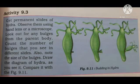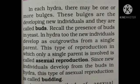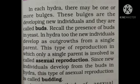In each hydra there may be one or more bulges — these bulges or outgrowths are the developing new individuals and they are called buds. Recall from Class 7 the budding in yeast — a small outgrowth develops in the parent cell, it matures, gets detached, and grows separately as a new individual. In hydra, the new individual develops as an outgrowth from a single parent, with no involvement of any other parent. That is why this type of reproduction is known as asexual reproduction.